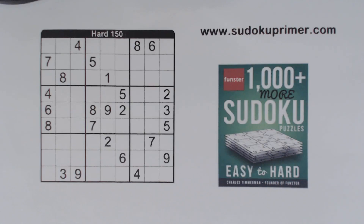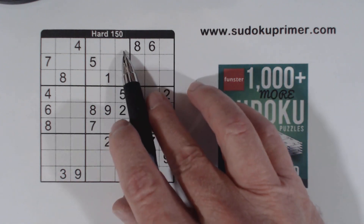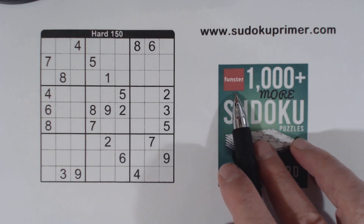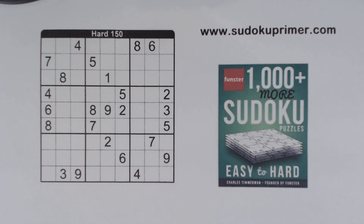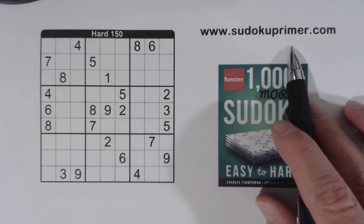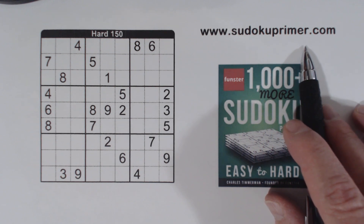Welcome to the Sudoku Primer Channel, where we solve Sudoku without using candidates. This is puzzle number 150 from 1,000 Plus More Sudoku Puzzles by Charles Timmerman. It's at funster.com, or you can go to amazon.com also and get it. We're going to look at quadruplets in this puzzle and learn how to use them, even if we can't solve them — we can still take advantage of them. You can print this puzzle to follow along by clicking the link in the description, or go to sudokuprimer.com and go to the menu item: Print YouTube Puzzles Before You Watch.